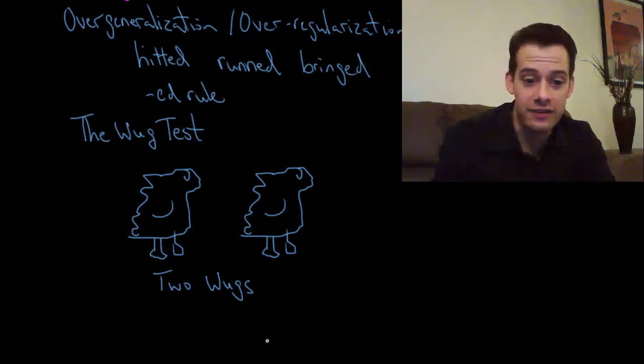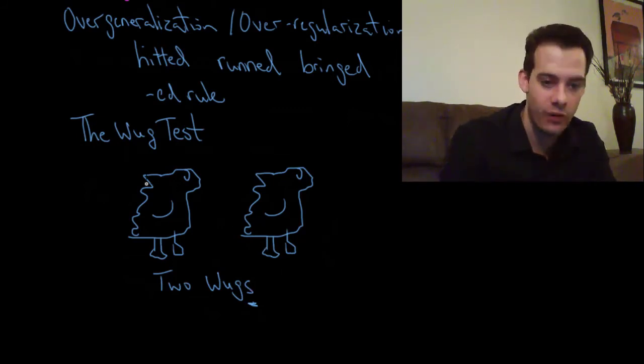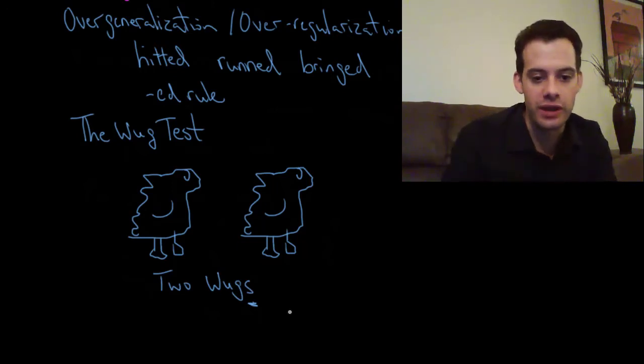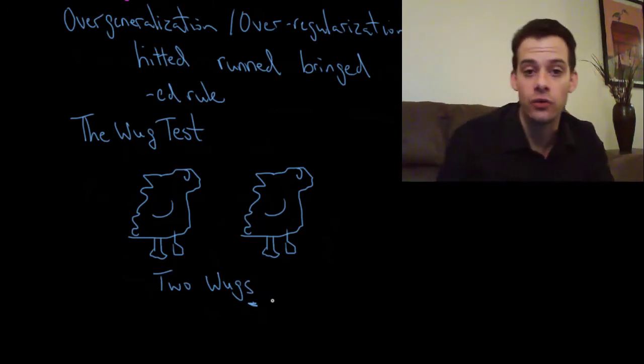Okay so what does this tell us? Well this tells us that the child understands the grammatical rule. It understands that putting an S onto a word makes it plural. You want to talk about, if this thing is called a WUG then how do I talk about two of them? I put an S on the end. I have two WUGs. And then you can do this with other words as well. So you can make up some verb.